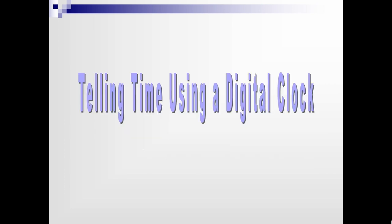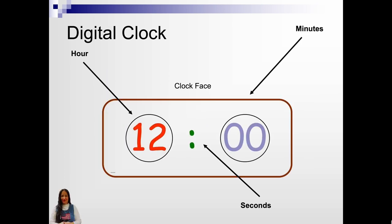Telling time using a digital clock. Here's a digital clock. We have the hour being 12. We still have the clock face. We have the seconds divided by colons, and we have the minutes.